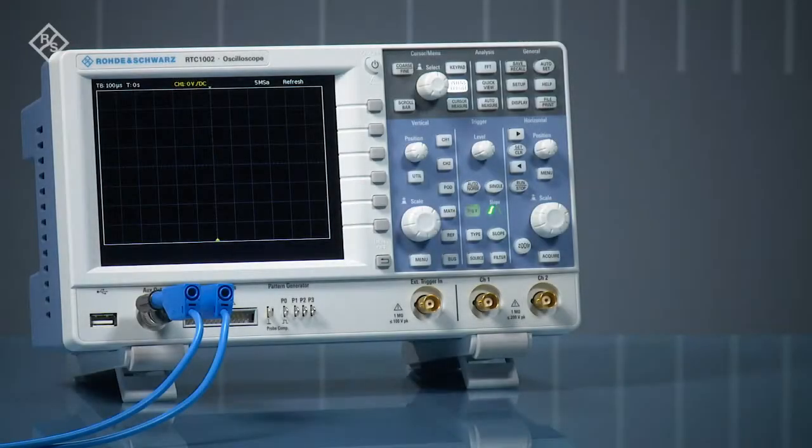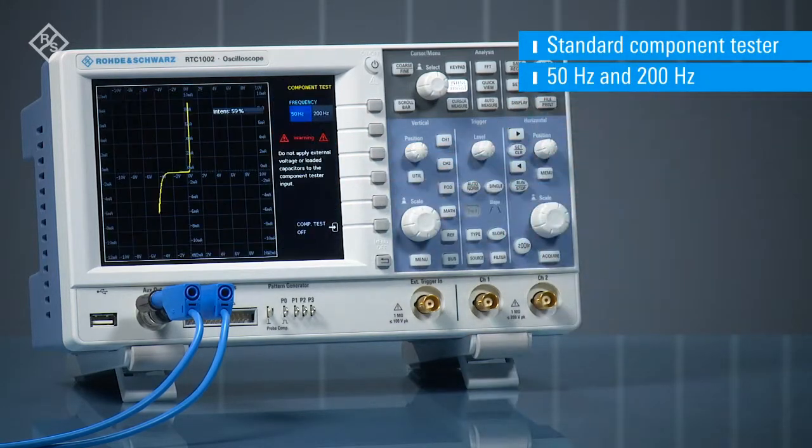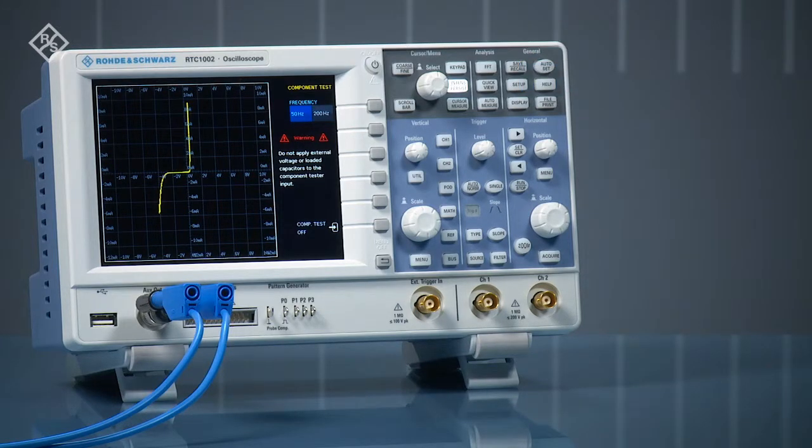RTC 1000 series oscilloscopes include a unique component tester as a standard feature. Do you need to check if a component like a Zener diode is working? The built-in component tester summarizes thousands of values in one telling diagram.